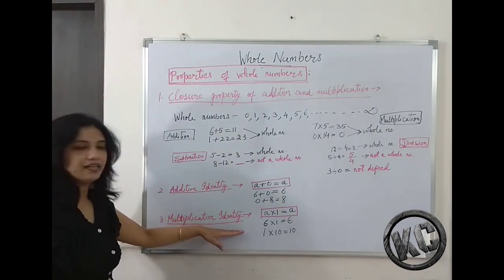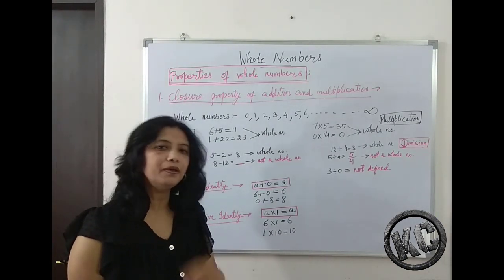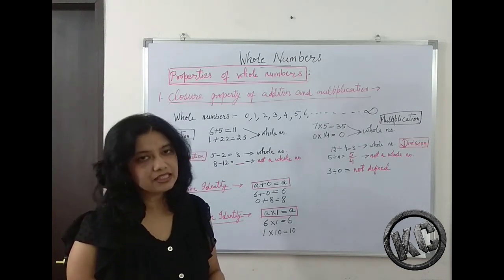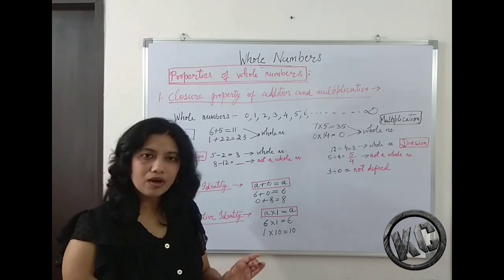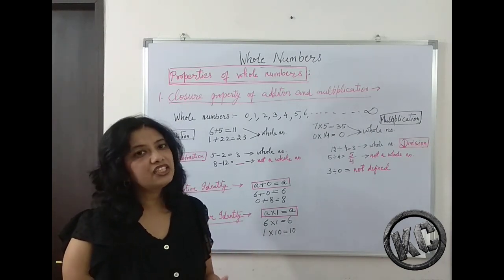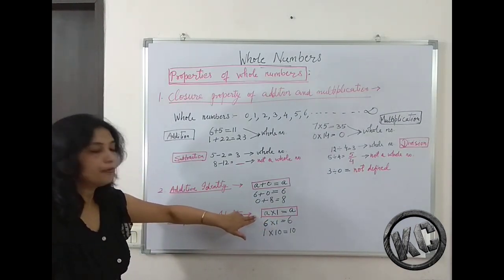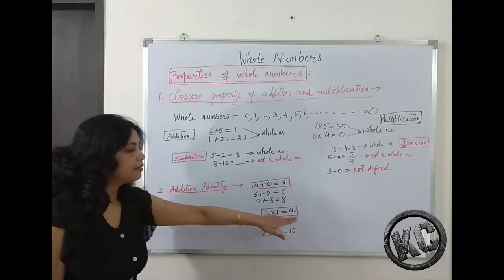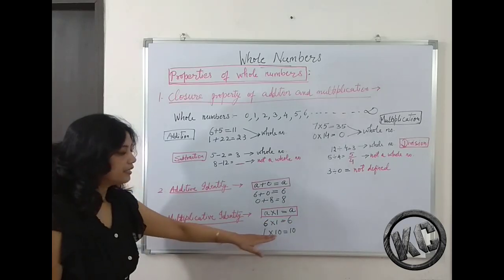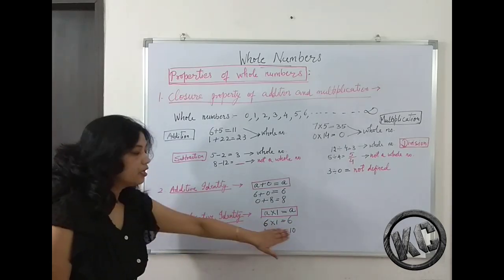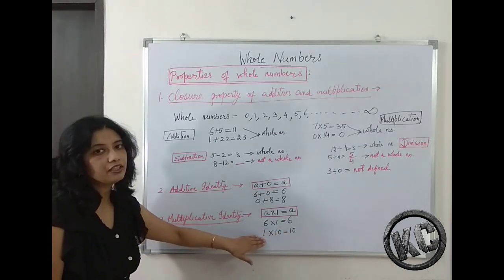Similarly, multiplicative identity means: which number can you multiply with any whole number so that its identity does not change? That number is 1. If you multiply any whole number by 1, the number remains the same. 6 multiplied by 1 is 6, and 1 multiplied by 10 is 10. The numbers do not change their identity. So 1 is called the multiplicative identity of whole numbers.